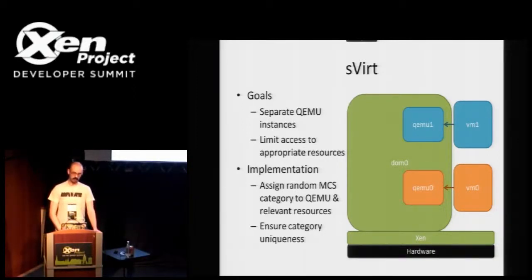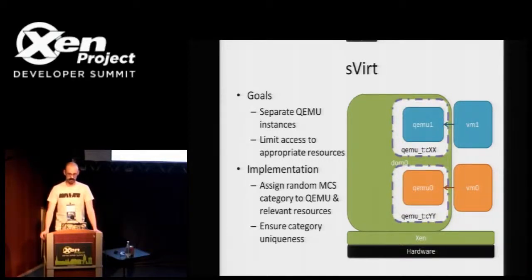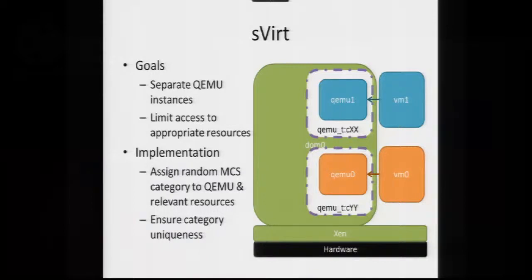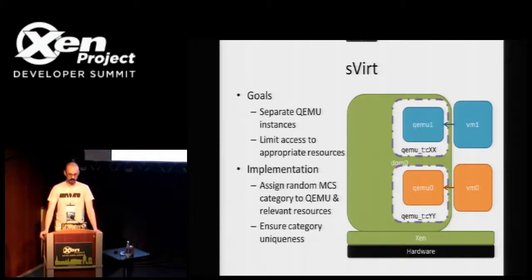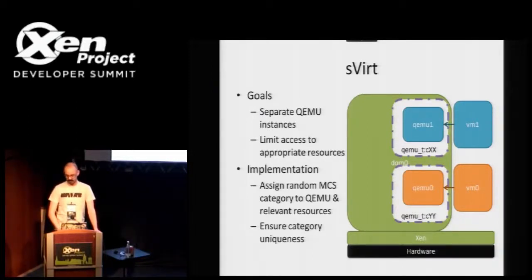We use a component of the SE Linux policy called MCS — Multi-Category Security — and we augment the tool stack with an inline mechanism for breaking off the QEMU domains such that they have random MCS categories assigned to them. The randomness isn't really important — the importance is just that those categories need to be different, and each QEMU needs its own unique category. It's perfectly valid to start from zero and count up so long as you guarantee they don't overlap. We went the random route just because I was feeling crafty that day and wanted to read something from /dev/random.